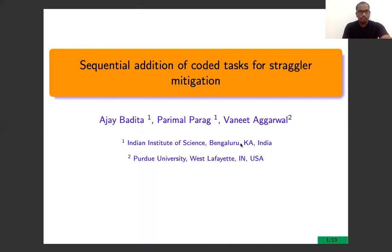One way to mitigate these stragglers is to have coded redundancy of sub-tasks. But this could have an impact on how many servers we are using. We propose a solution which takes advantage of coded redundancy, but at the same time deals with the cost as well.